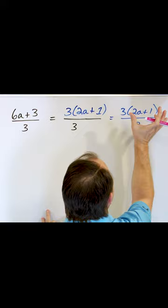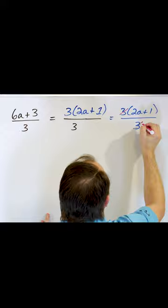So it's still multiplied in the top and then there's a three in the bottom. So I'm free to cancel those or divide them away, giving me one left behind.